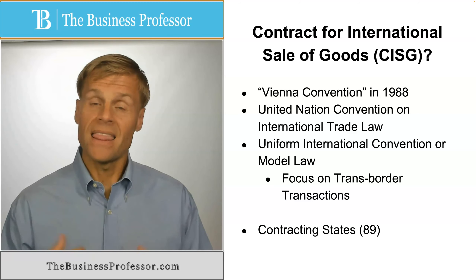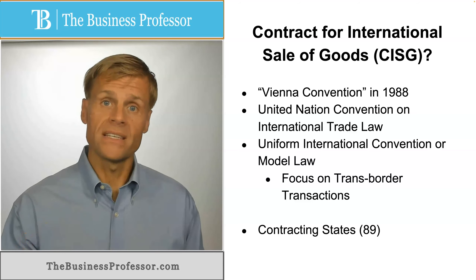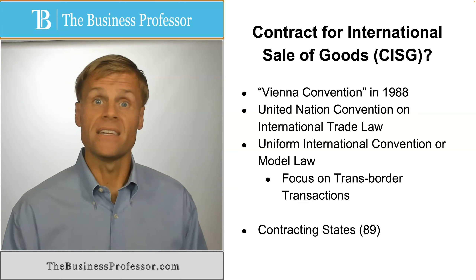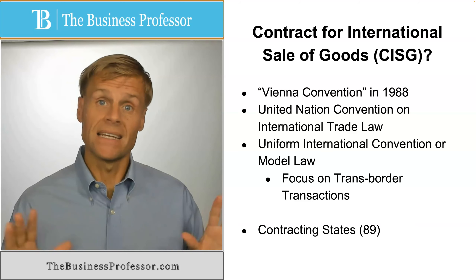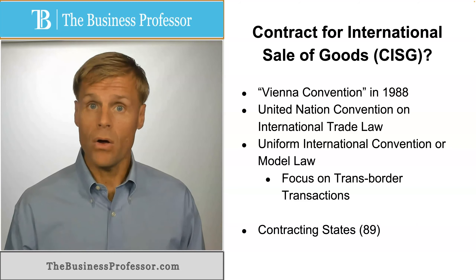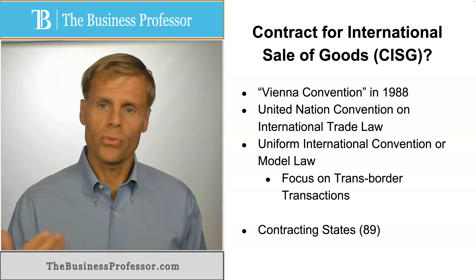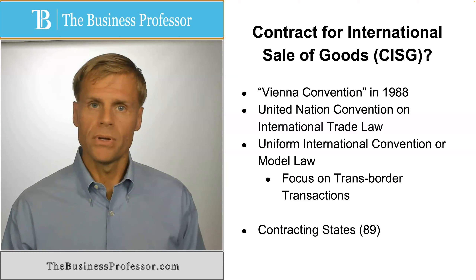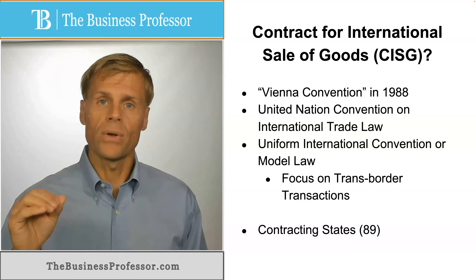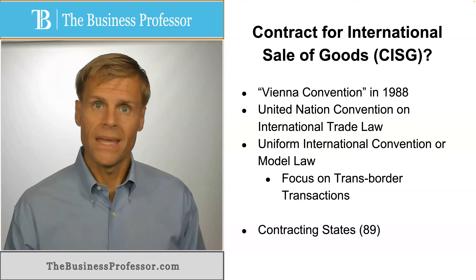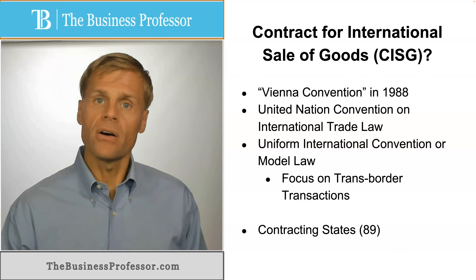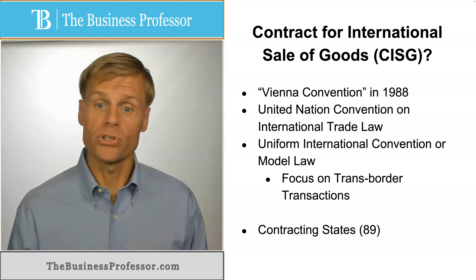That is the purpose of the CISG. The CISG is also referred to as the Vienna Convention, signed in 1988. It is a model law created through a subgroup of the United Nations — specifically, the United Nations Convention on International Trade Law — with the purpose of facilitating cross-border transactions.